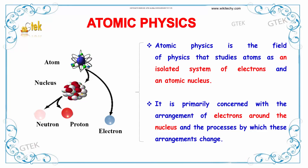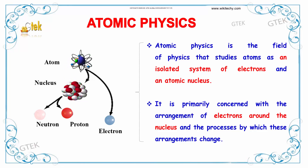This nucleus has neutrons and protons. Atomic physics is primarily concerned with the arrangement of electrons around the nucleus and the processes by which these arrangements are changed.